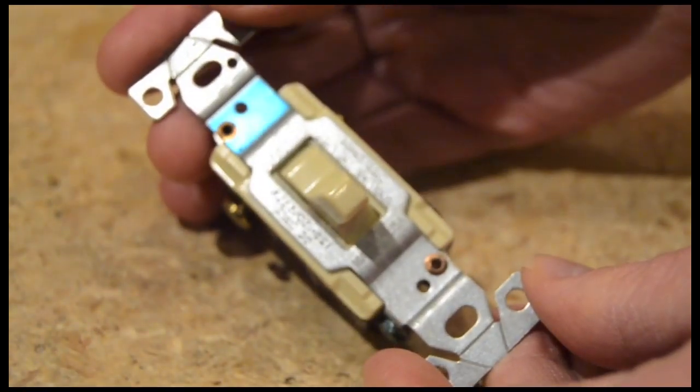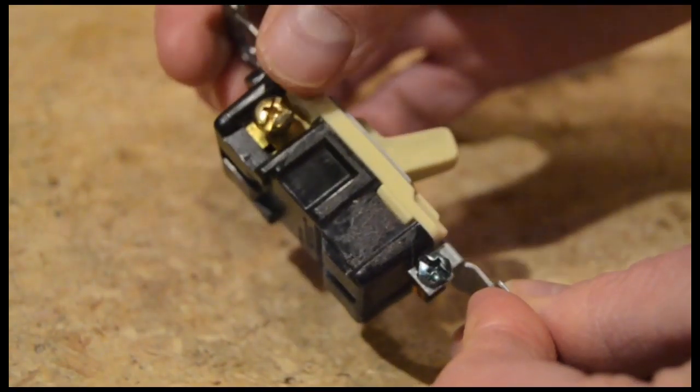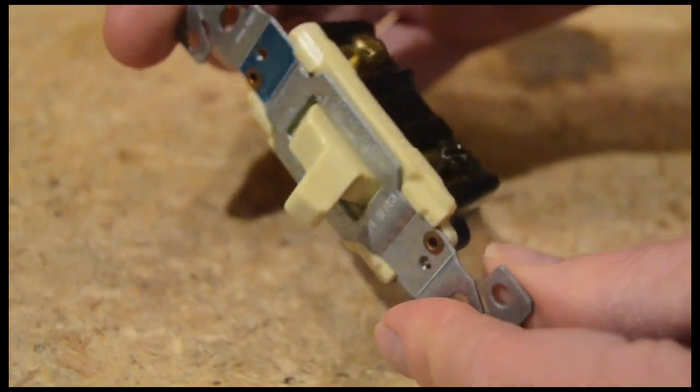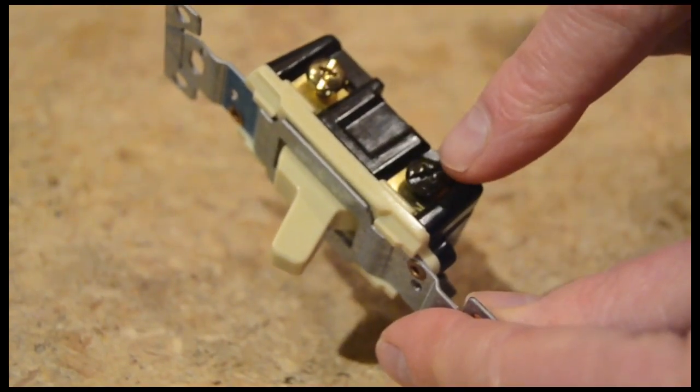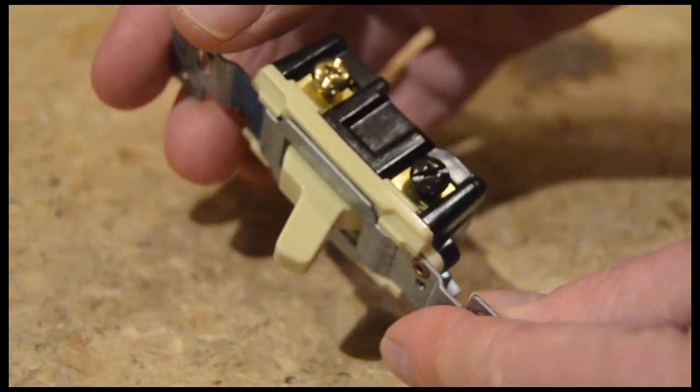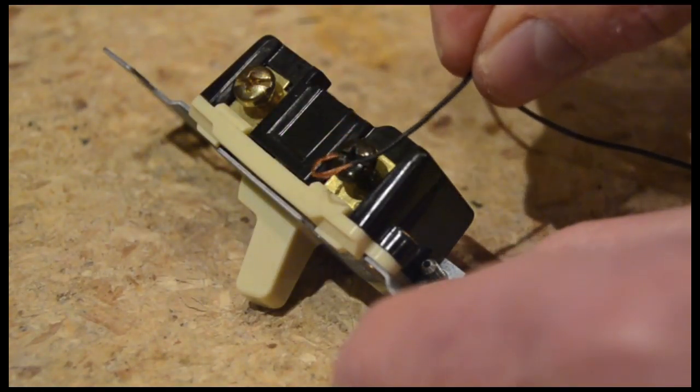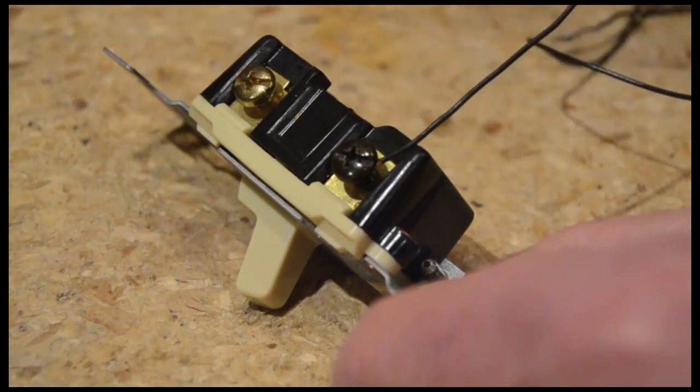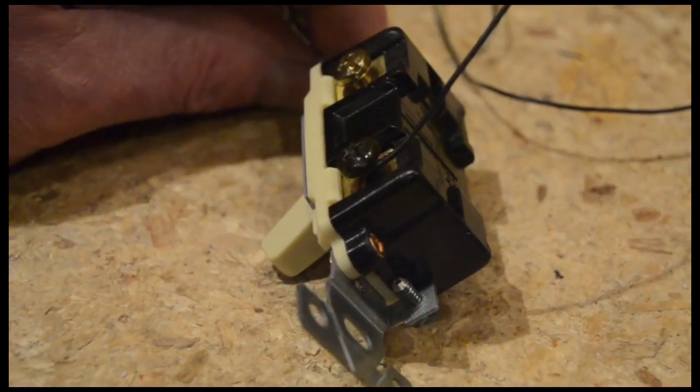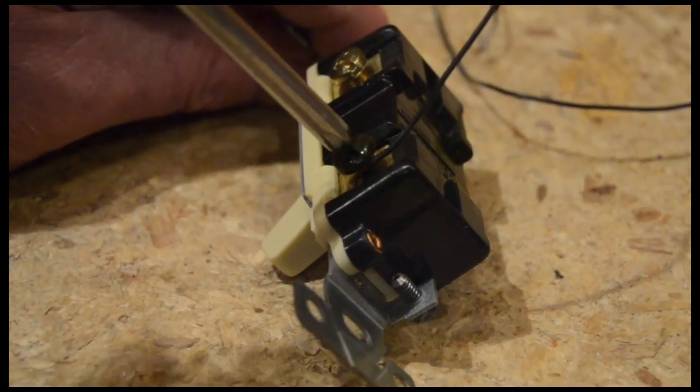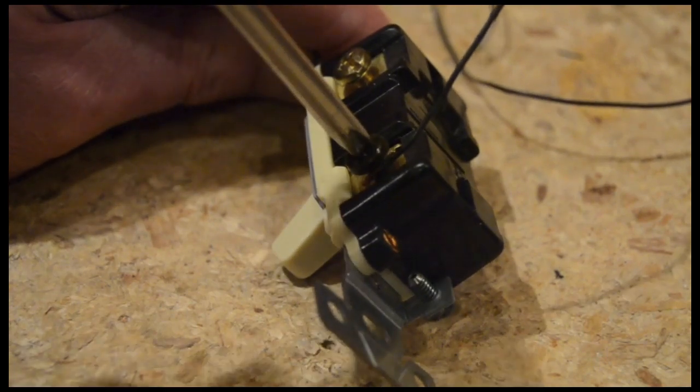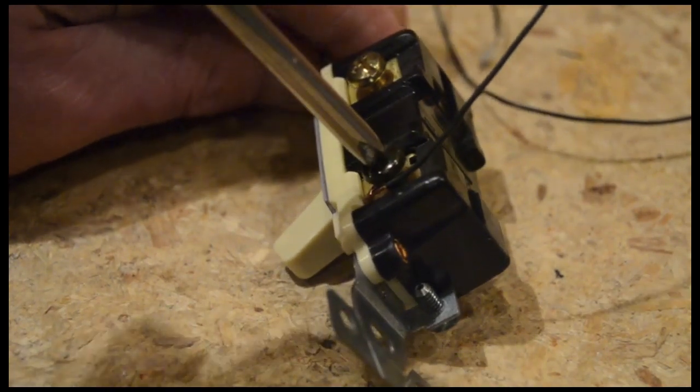Use a standard three-way light switch. Find the common terminal. This is usually the bottom screw on the side with two screws, or is indicated by a darker colored screw. Strip the insulation from the ends of a foot-long length of 22 AWG wire. Loop one end and attach it to the common terminal. Make sure the loop is facing clockwise. This will help keep it in place as you tighten the screw.